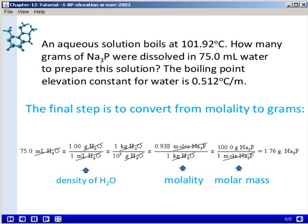At the end, we find that we need 1.76 grams of sodium phosphide dissolved in 75.0 milliliters of water to prepare the solution.